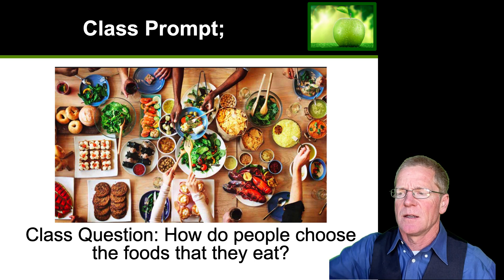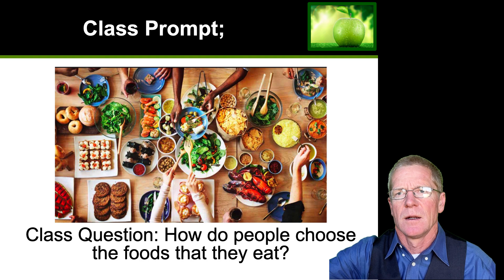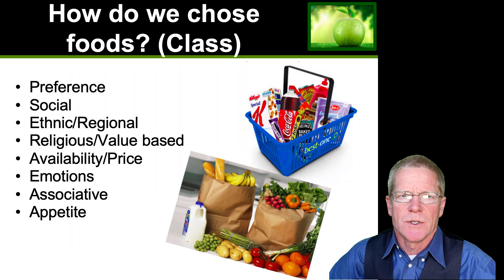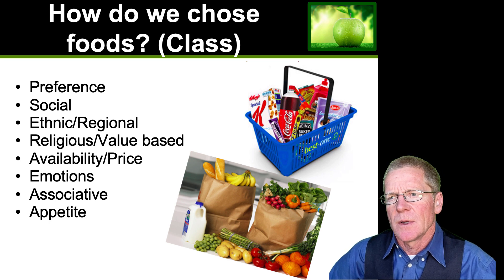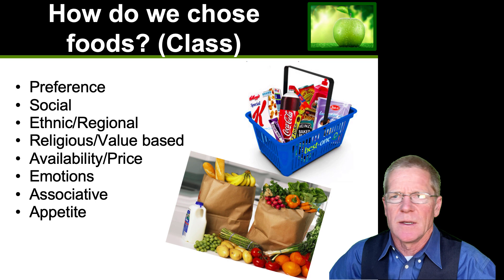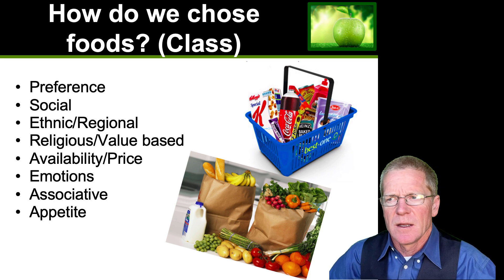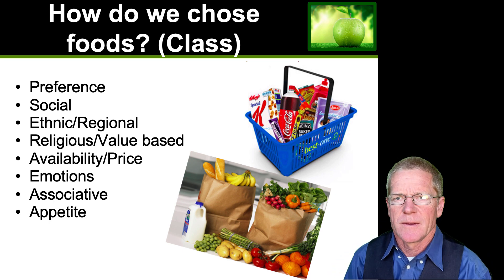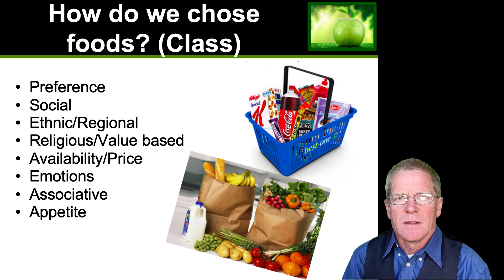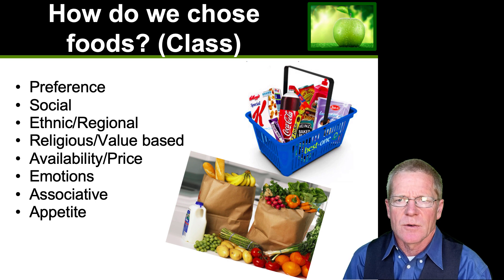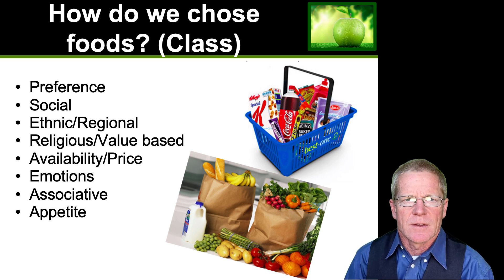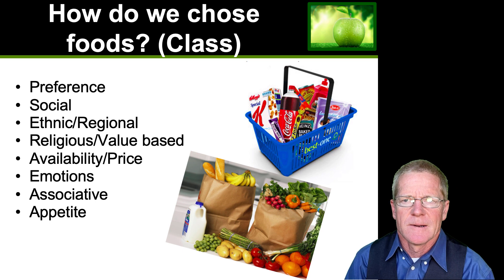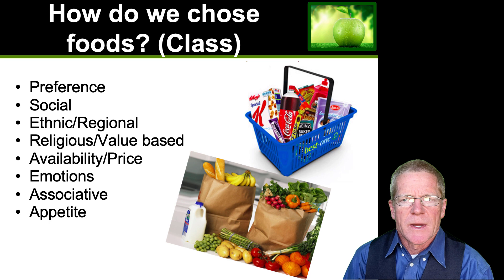How do people choose the foods that they eat? There are a large number of ways. One is preference, which may be largely driven by genetics or the foods you grew up with. There are social influences — we tend to eat the same sorts of foods as others around us. There are ethnic and regional choices, and I think ethnic foods are the best place to start when designing your personalized healthy diet. Some choices are religious-based or value-based — for example, vegetarians or vegans don't eat meat.